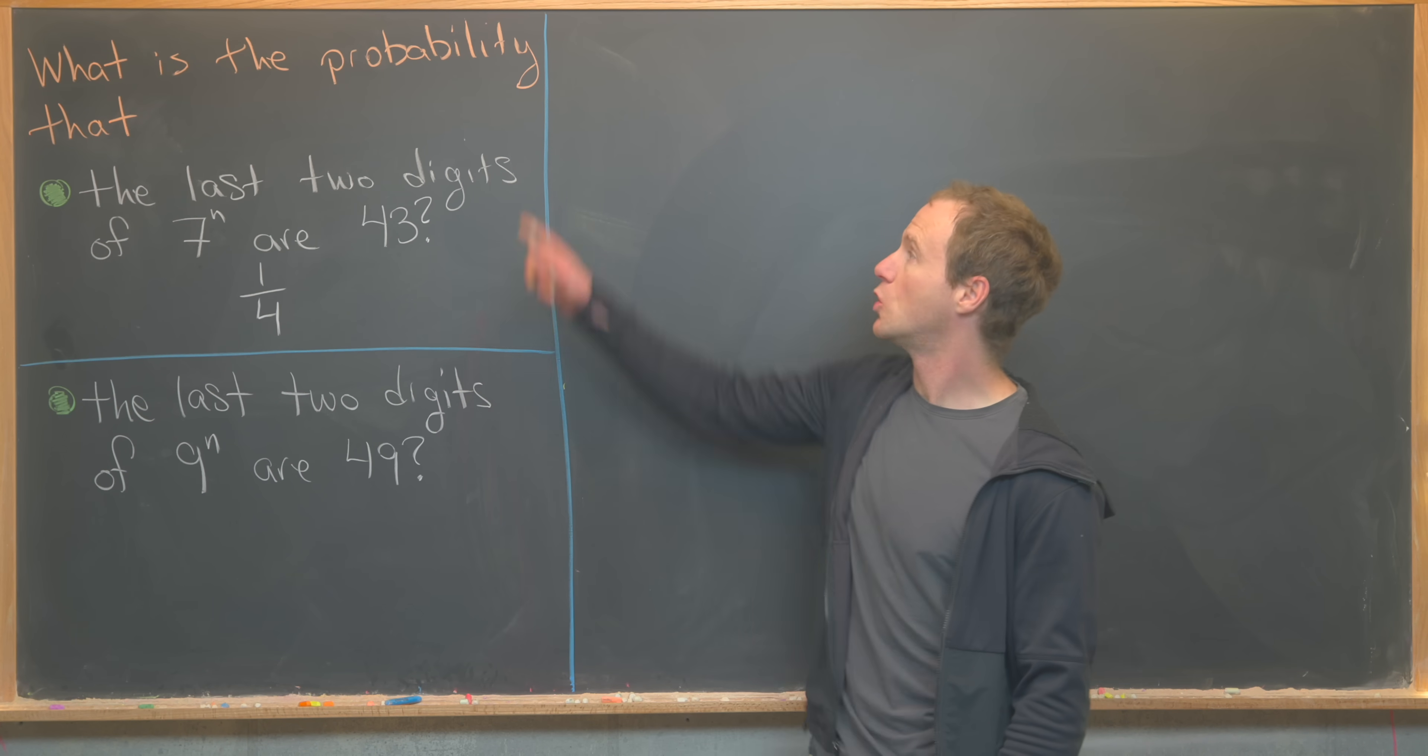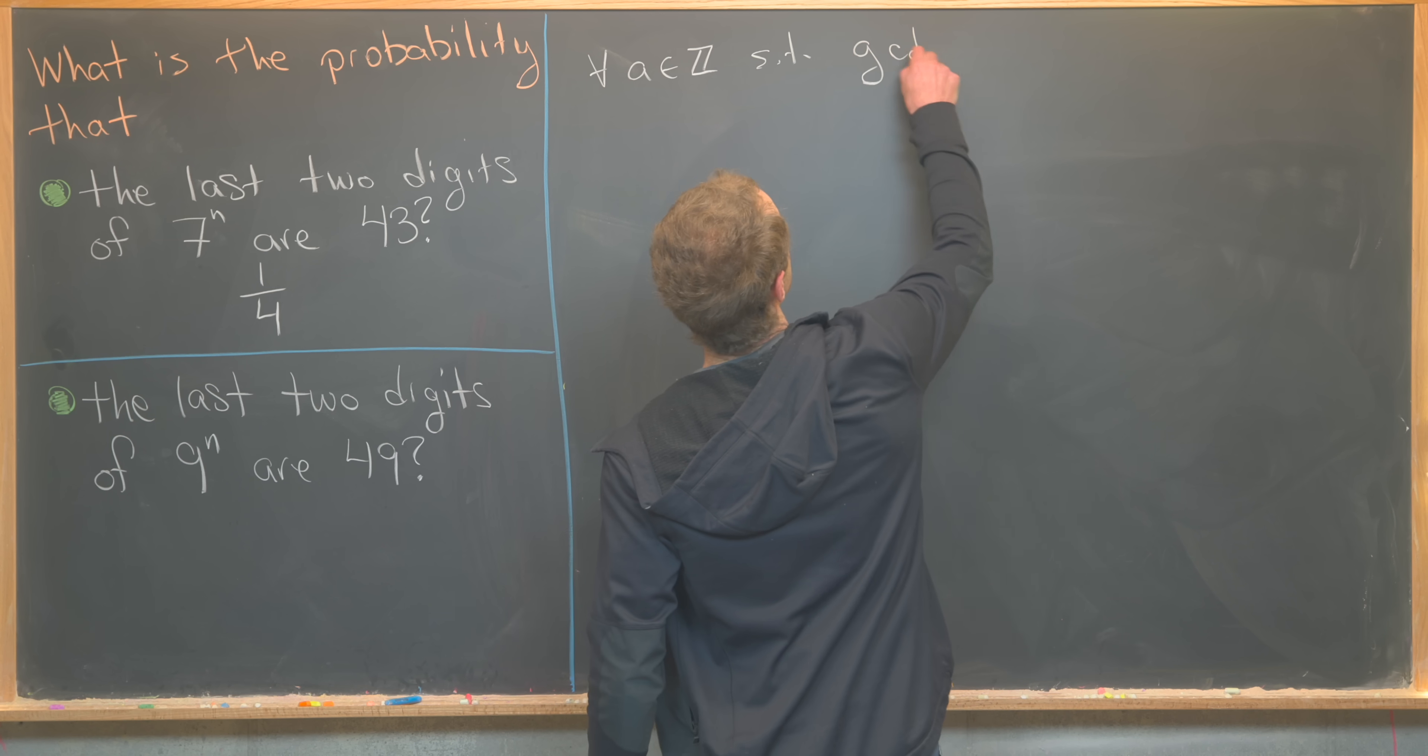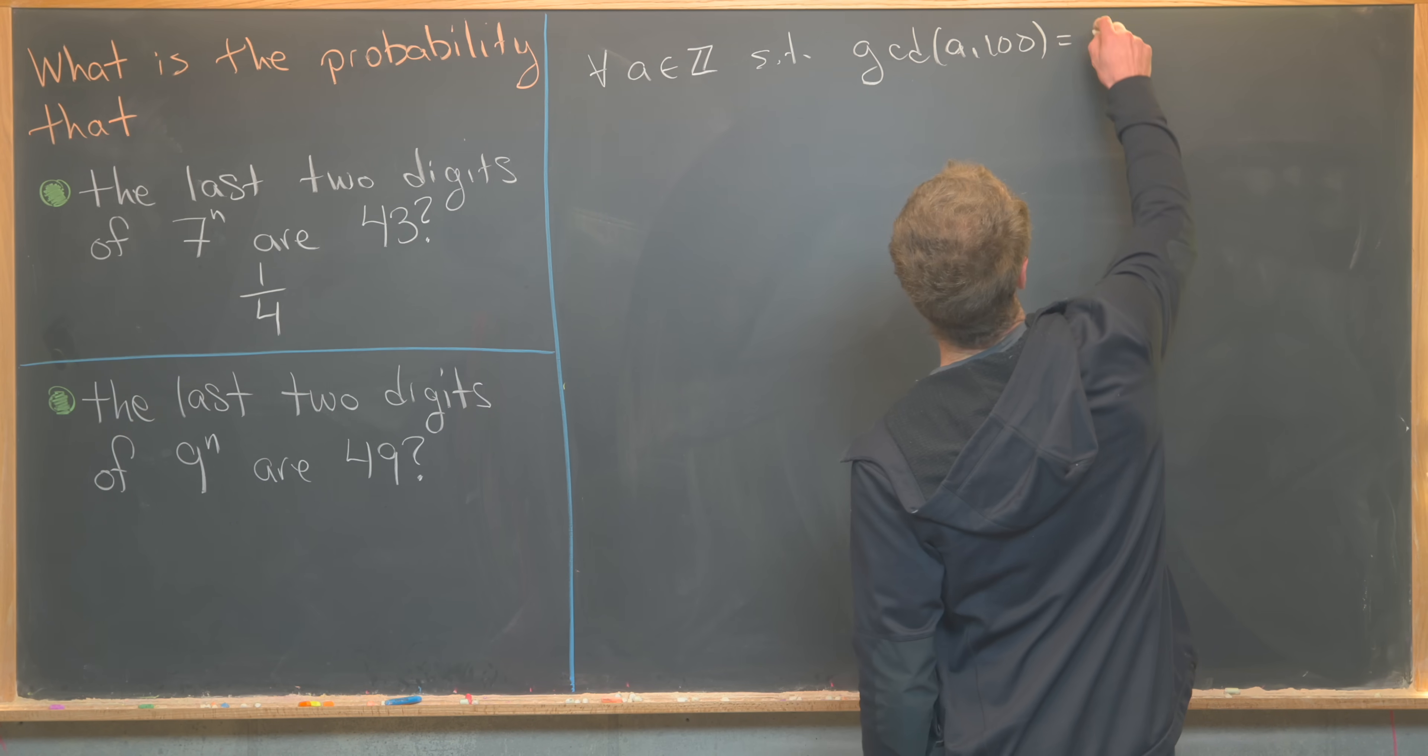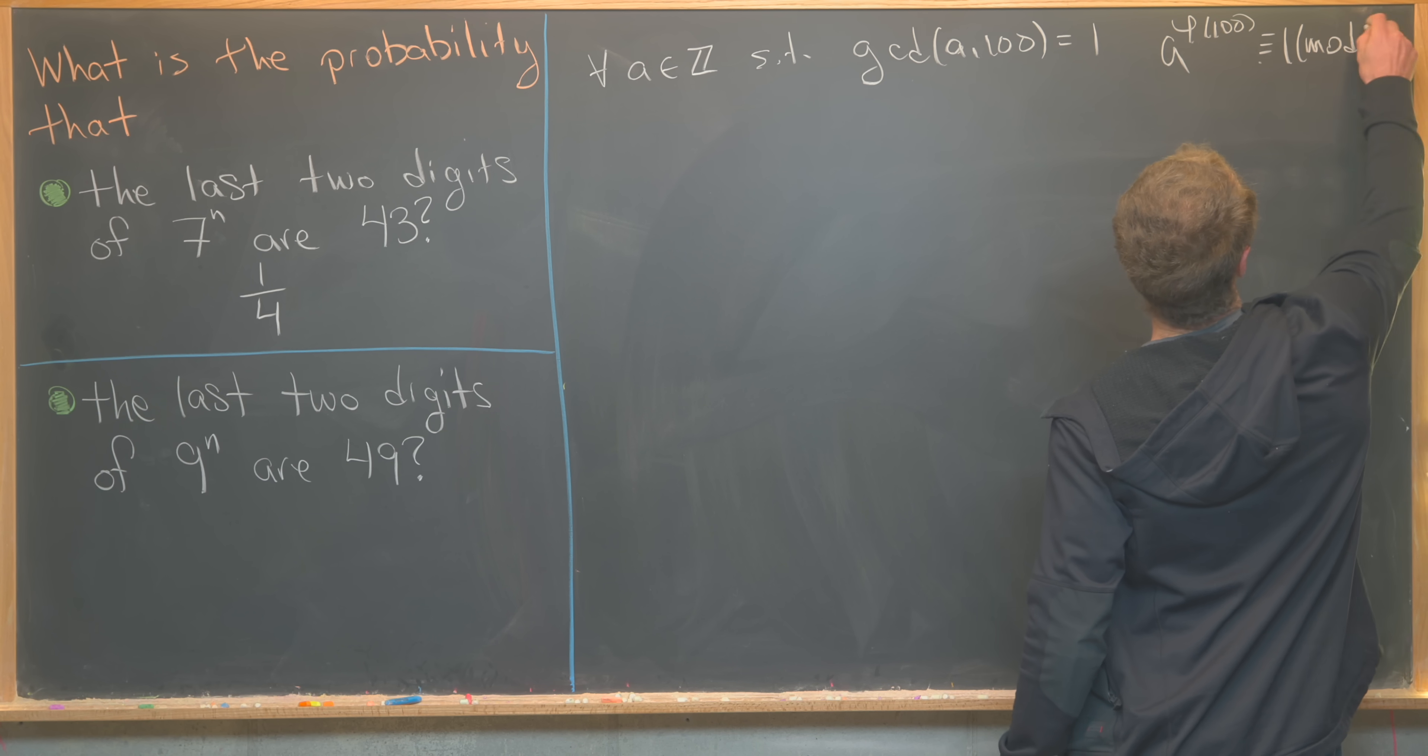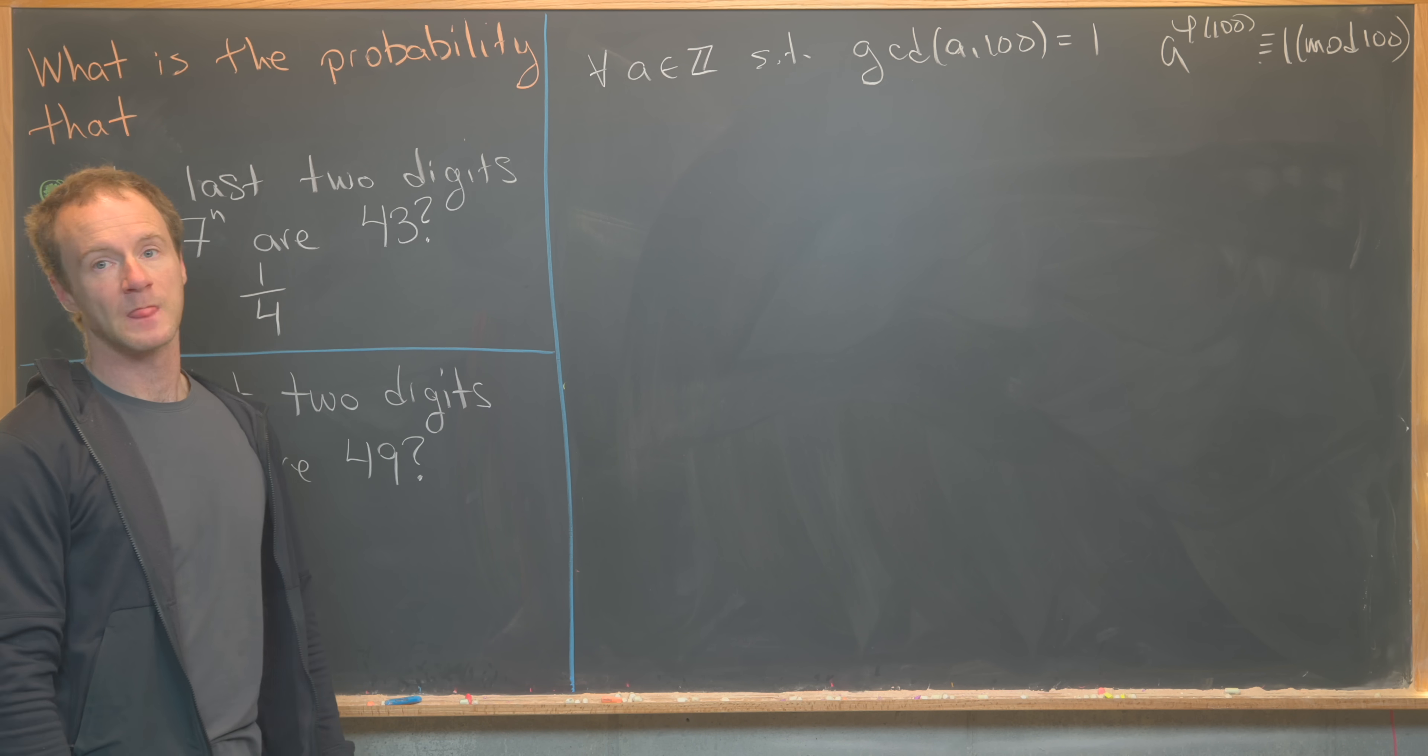Now we're ready to look at the second question. What's the probability that the last two digits of 9 to the n are 4 and 9? In other words, 49. And this is as n ranges over all positive integers. So again, we're going to work modulo 100, but we're going to keep an eye on those things that we calculated or that we recalled in the previous board. So we know that for all a, where a is an integer such that the GCD of a with 100 is equal to 1, a to the phi of 100 will be congruent to 1 mod 100. And that's by Euler's theorem, sometimes called Euler's generalization of Fermat's little theorem.